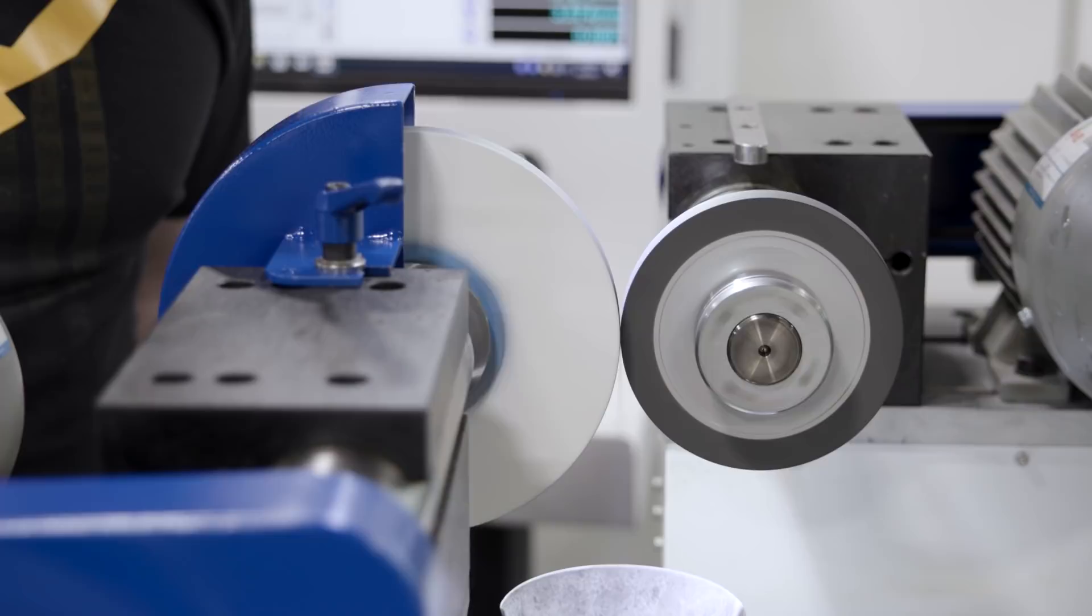Now that we have our wheels selected to create this tool, we're going to go over to the external dresser and true our wheels and ensure that the angles on them are perfect so that we get everything we need according to our print.